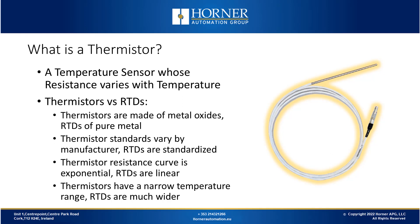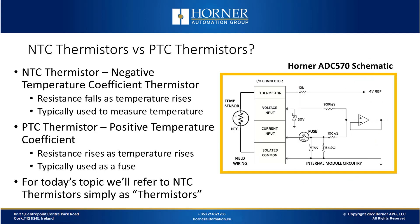Another thing about thermistors is their resistance versus temperature curve is exponential, whereas RTDs are much more linear. Also, thermistors have a much narrower temperature range than RTDs. There are two different classifications of thermistors: NTC and PTC. NTC stands for negative temperature coefficient, meaning resistance falls as temperature rises. These are the sensors typically used to measure temperature. PTC, or positive temperature coefficient, means resistance rises as temperature rises, and these are typically used as a fuse.